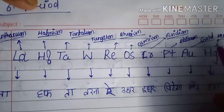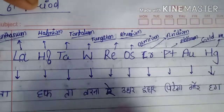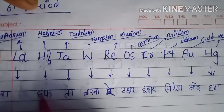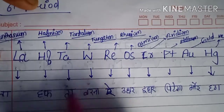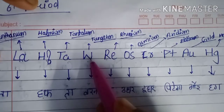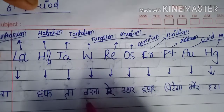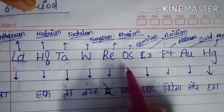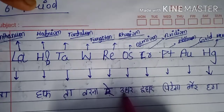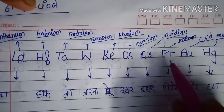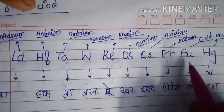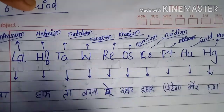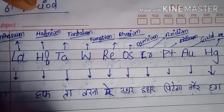So I want you to remember them like this: La as 'la', Hf as 'huff', Ta as 'ta', W — you can remember it as you like — Re as 're', Os as 'udhar' (that side), Ir as 'idhar' (this side), Pt as 'pitega' (will hit), Au as 'or' (and), Hg as 'hug'.